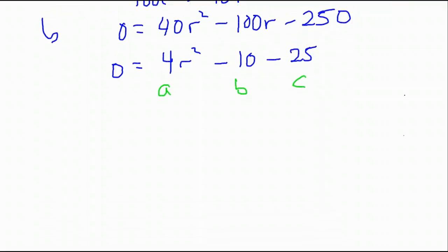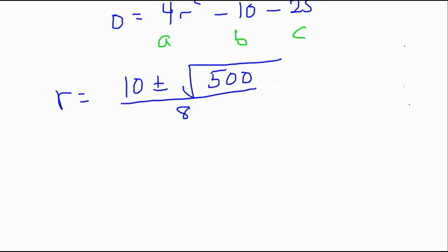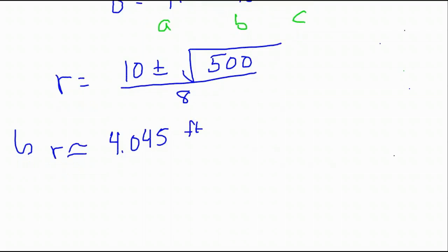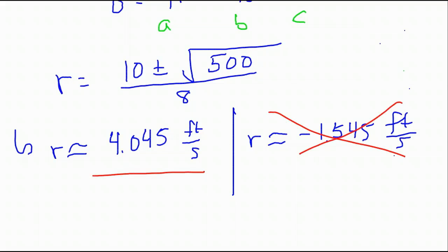This does not factor, so you actually do need to use the quadratic formula here. Plugging the numbers in, you're going to get 10 plus or minus square root of 500 over 8, and then separately computing those, 10 plus the square root of 500 over 8 is approximately 4.045. That's going to be feet per second. If you look at that expression with the minus sign, you're going to get 10 minus the square root of 500 over 8, and that's going to be approximately negative 1.545 feet per second. In this case, our rate is not going to be negative, so we're going to throw out the negative term, and our final answer in this case is going to be approximately 4.045 feet per second if we round to three decimal places.